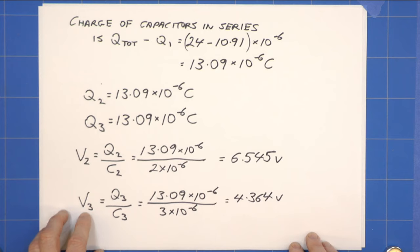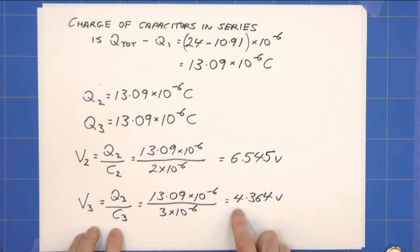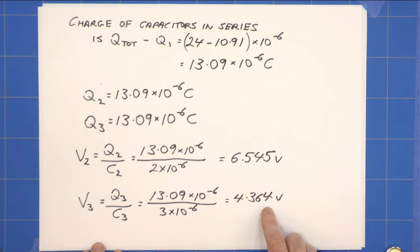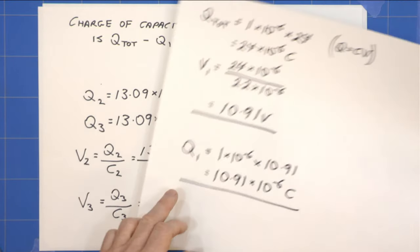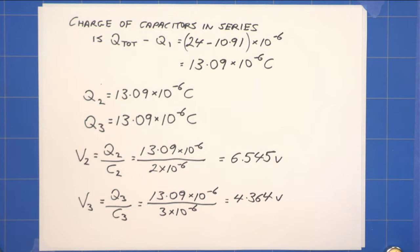And similarly for V3, you work through it and Q3 over C3 and you will get, because we're now dividing by 3 times 10 to the minus 6, you get 4.364 volts on V3 and that gives you your 1, 2, 3, 4, 5, 6 answers that Walter Lewin was looking for. Thank you.